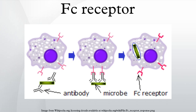This family includes several members: FcγRI, FcγRIIA, FcγRIIB, FcγRIIIA, and FcγRIIIB, which differ in their antibody affinities due to their different molecular structure.